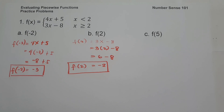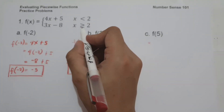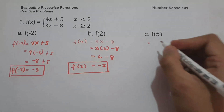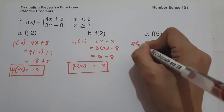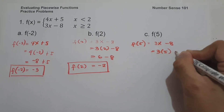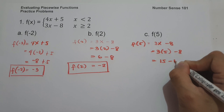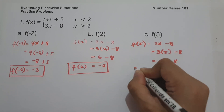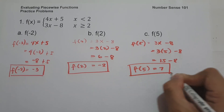What about letter C? How can we find the value of f of 5? We are going to use 3x minus 8 because 5 is greater than 2. So this will be 3 multiplied by 5 minus 8. 3 times 5 is 15, minus 8, that is 7. So this will be the value of f of 5, and this will be our answer.